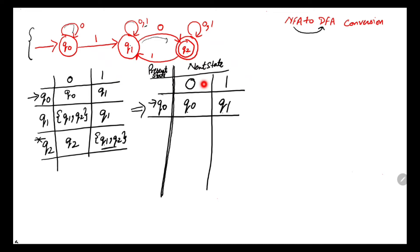Now we check which one is a new state. A new state is a state which has not yet appeared in the present state column. The present state column contains q0, so q0 is not a new state — it's an old state. But q1 has not yet appeared in the present state column, so we will write the transitions for q1.